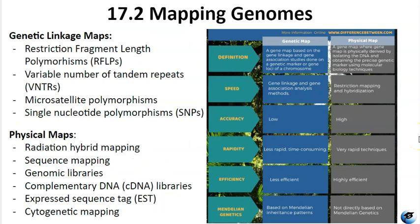Genetic linkage maps utilize various techniques to map genes and genetic markers. Restriction fragment length polymorphisms (RFLPs) analyze differences in DNA fragment sizes resulting from genetic variations. Variable number of tandem repeats (VNTRs) involve detecting variations in the number of repeated DNA sequences. Microsatellite genotyping identifies differences in the lengths of short repeated DNA sequences in non-coding regions. Single nucleotide polymorphisms (SNPs) detect single base differences in DNA sequences.